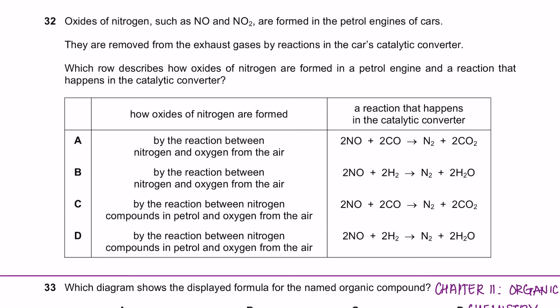Question 32. Oxides of nitrogen, such as nitrogen oxide and nitrogen dioxide, are formed in the petrol engines of cars. They are removed from the exhaust gases by reaction in the car's catalytic converter. Which rule describes how oxides of nitrogen are formed in a petrol engine and a reaction that happens in the catalytic converter?